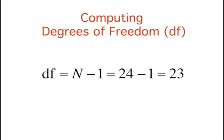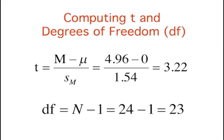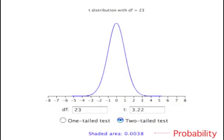To get the probability value for a t of 3.22, we need to know how many degrees of freedom we have. The degrees of freedom is equal to n minus 1, which is 23 in this case. Notice that n is the number of different scores, because these are the scores we are analyzing. Now that we know the degrees of freedom and the t value, we can consult the t distribution calculator or a t table in a statistics textbook. As shown here in our two-tailed test, the probability of getting a t value of less than negative 3.22 or greater than 3.22 is only 0.0038.